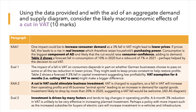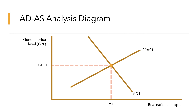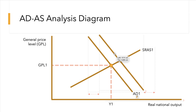In a 10-marker, you don't have to write an awful lot. You just need to make two valid KAA points and evaluate both. A lot of people tend to overwrite on 10-markers — they're just looking for good economics and good use of the extracts, and also an ADAS diagram to show what might happen to demand and supply. A cut in VAT could stimulate a bit of extra demand in the economy, so AD could shift from AD1 to AD2.